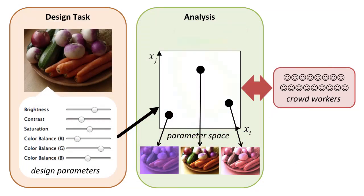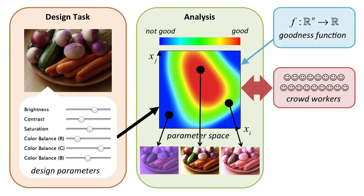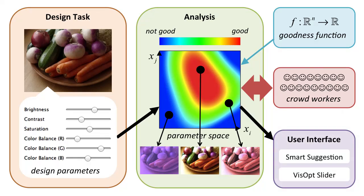Each crowd worker is asked to provide relative scores of pairwise comparisons of two visual designs. Based on these relative scores, our system derives a map of goodness on this parameter space, which we call a goodness function. By using this goodness function, we provide two interfaces for design exploration: Smart Suggestion and Visopt Slider.